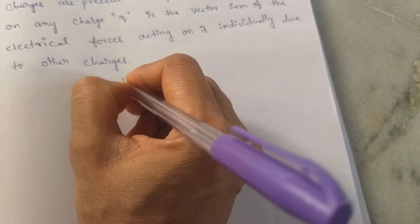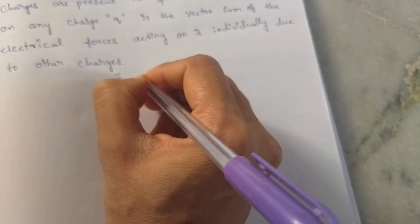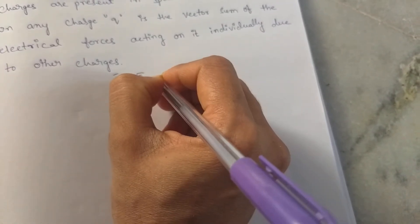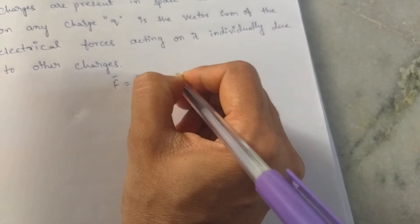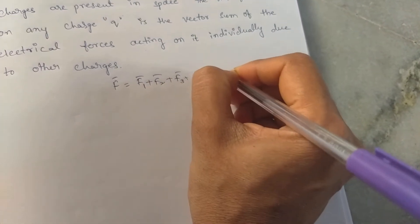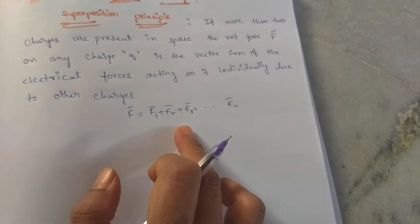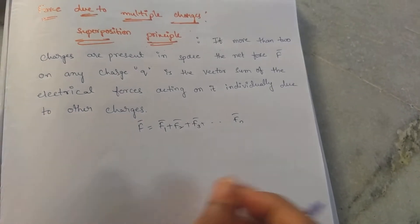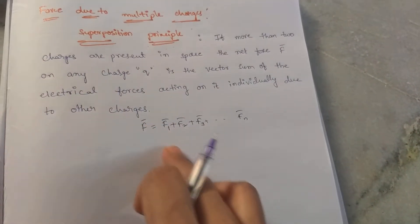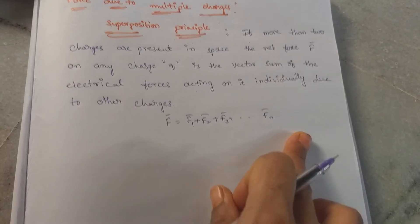What does this indicate? If F is the force acting on Q, then the total force is equal to F1 + F2 + F3, and so on up to Fn. This means multiple charges are present, and the force acting on charge Q is the vector sum of all the charges present in the given space.